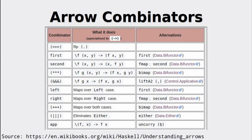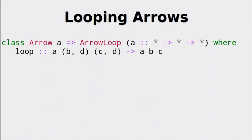Summarizing the combinators we have seen shows us that in the context of functions we could have used many alternative functions we already know, but arrows are not confined to applications on normal functions, as we have seen with the Kleisli arrows. So these kinds of combinators and compositions are also possible for monads and whatever else we can define arrows for.